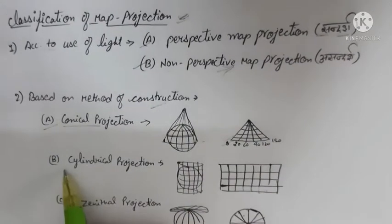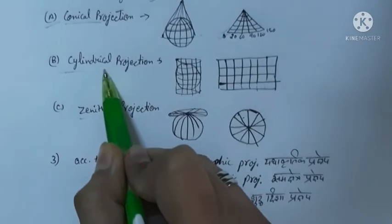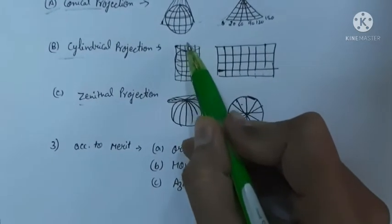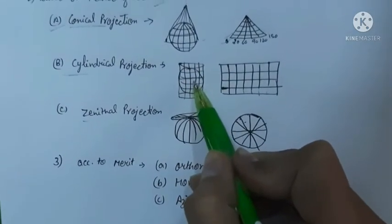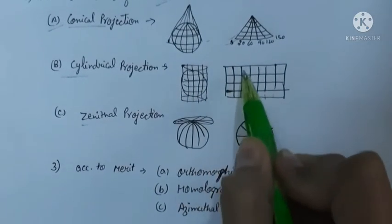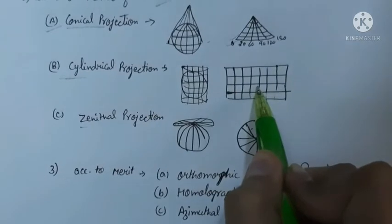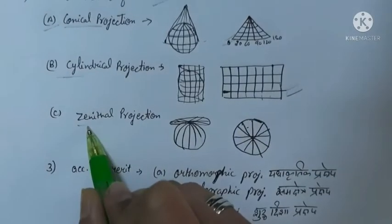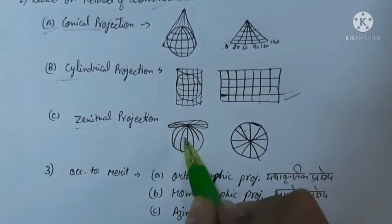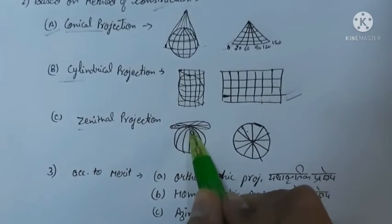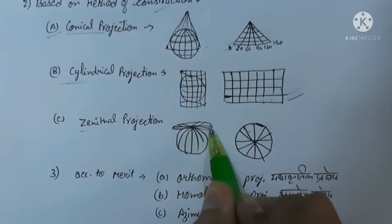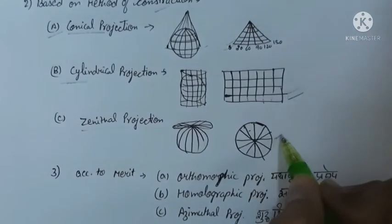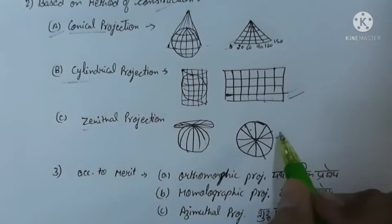Next is cylindrical projection, in which a cylinder is placed around the globe. After that is zenithal projection — in this, a flat plane is considered to touch the globe at a certain point, and the network of latitudes and longitudes drawn on it is called zenithal projection or khamadhya prakshep.